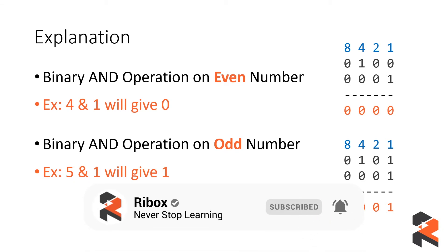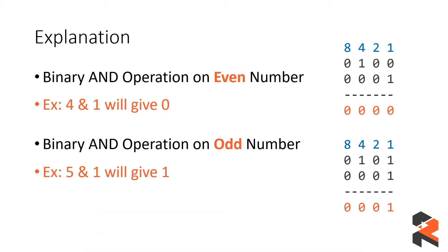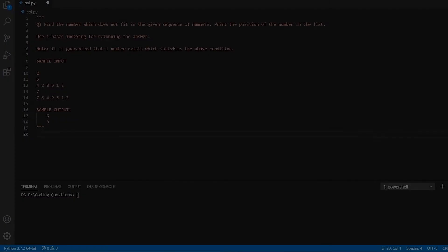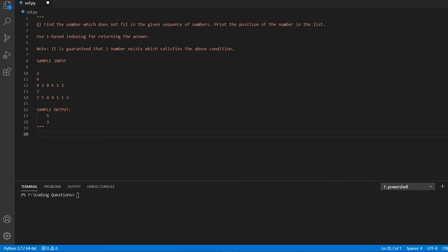Our approach is simple: take the list of numbers and convert each element to 0 or 1 using the AND-with-1 operation. If the list contains all zeros and one 1, the number at that position is the odd one out. Conversely, if all are ones and one is zero, that's the odd one out. One unified logic handles both cases. Let's start by handling the input.